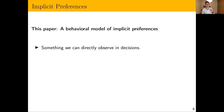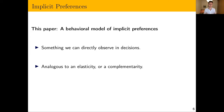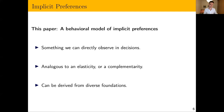We're going to present a behavioral model of implicit preferences — implicit preferences are something we can observe directly in decisions. This is in contrast to implicit association tests and other approaches using non-choice data; we purely look at decisions and back out what the implicit preferences revealed in those choices are. Think of it as analogous to an elasticity or a complementarity — a feature of preferences that in more opaque choices shift in a certain direction.